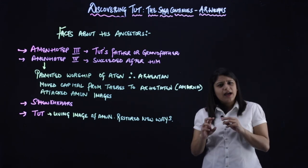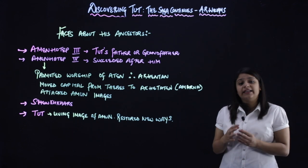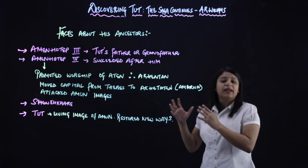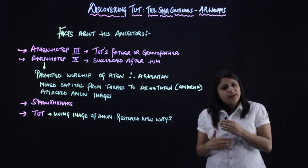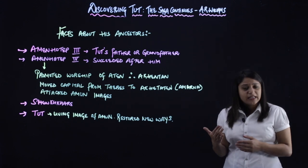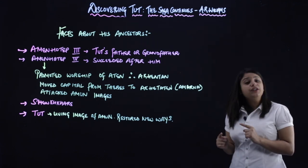And after him, for a very brief time a ruler came whose name was Smenkhare, who came very briefly, did not have much role in history, and after him came Tut.